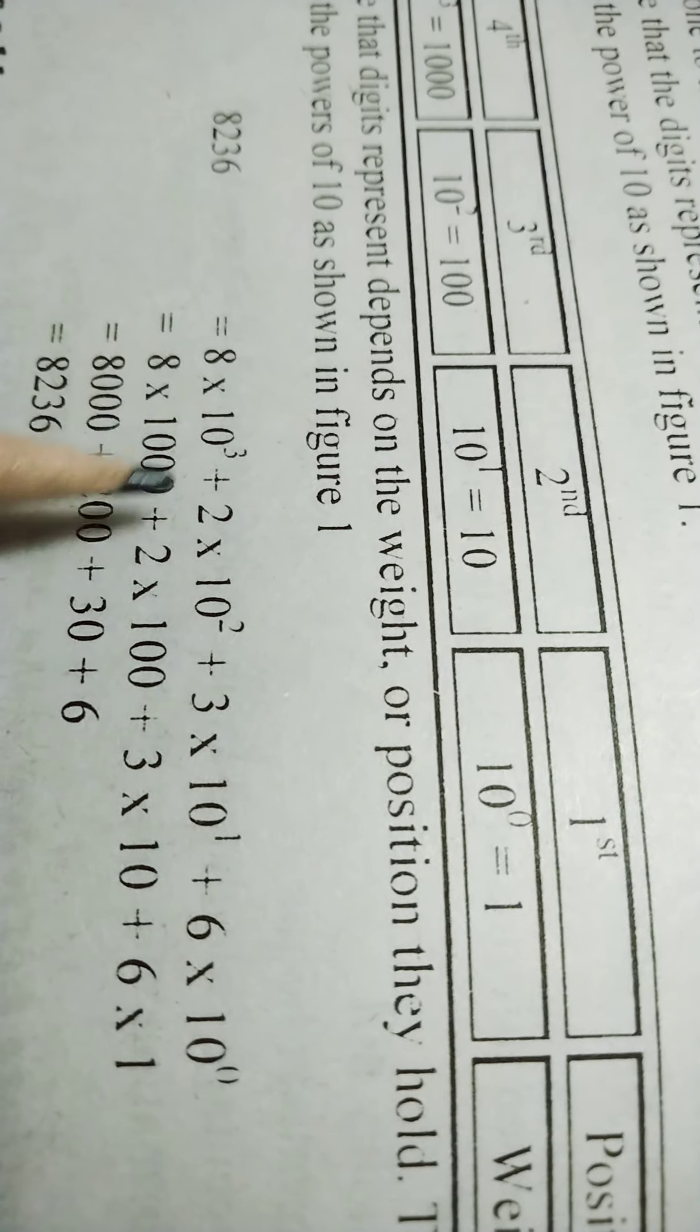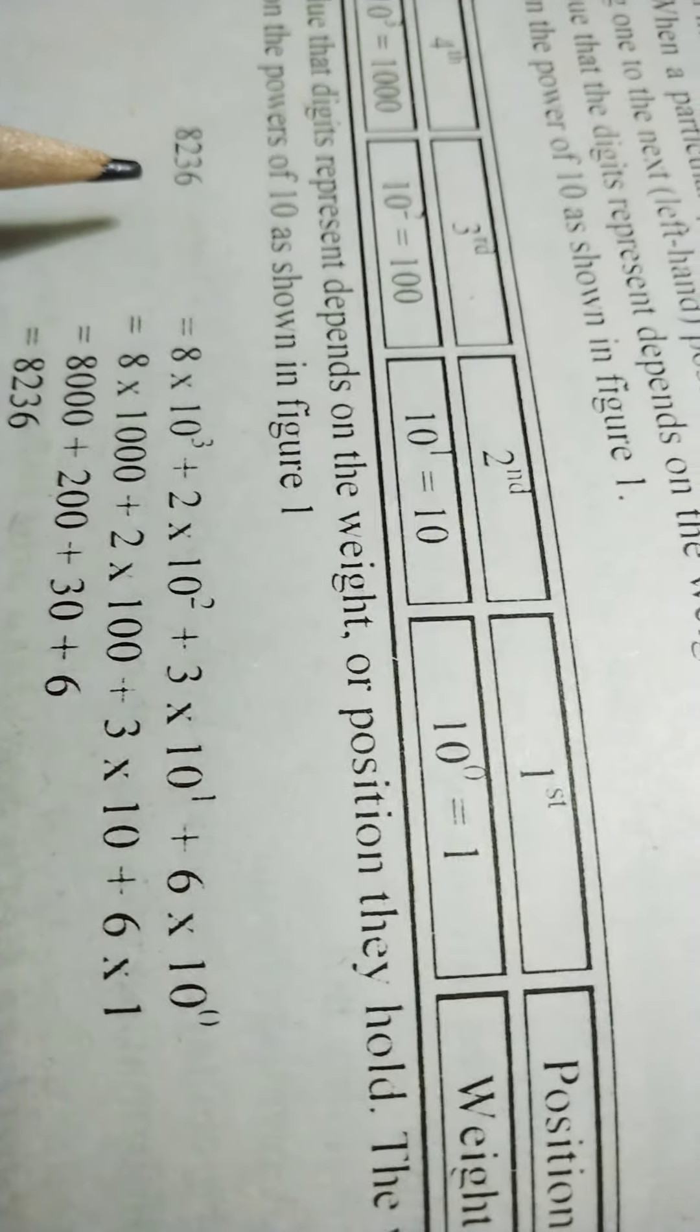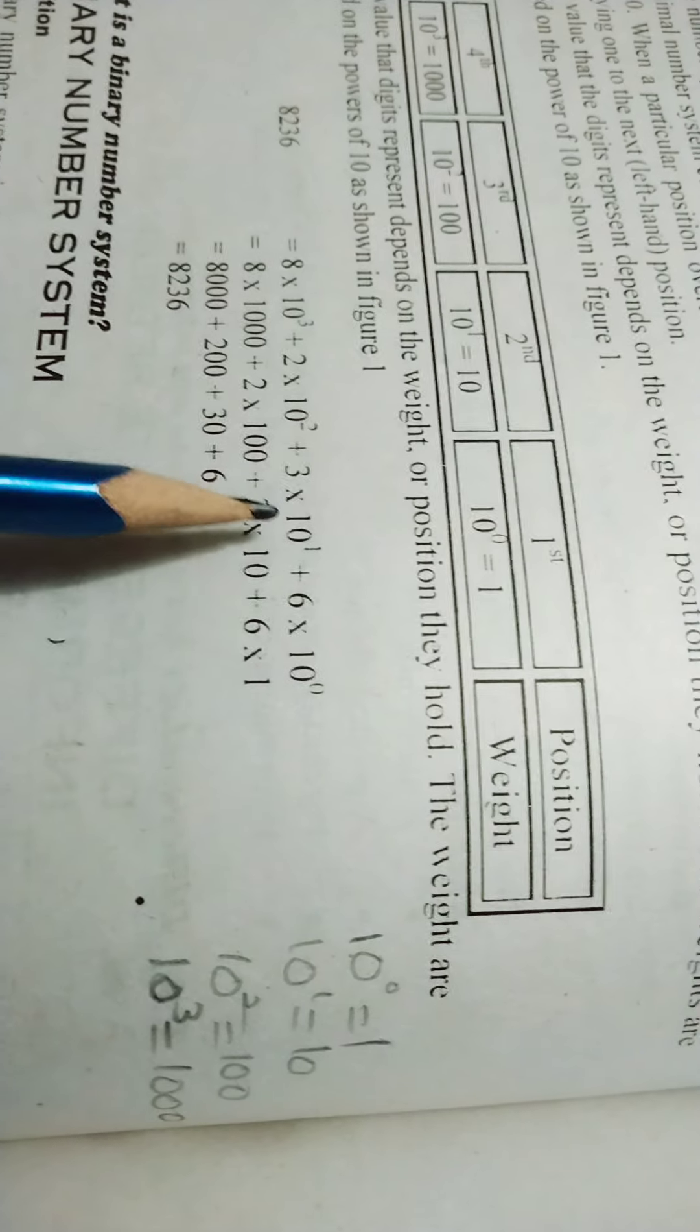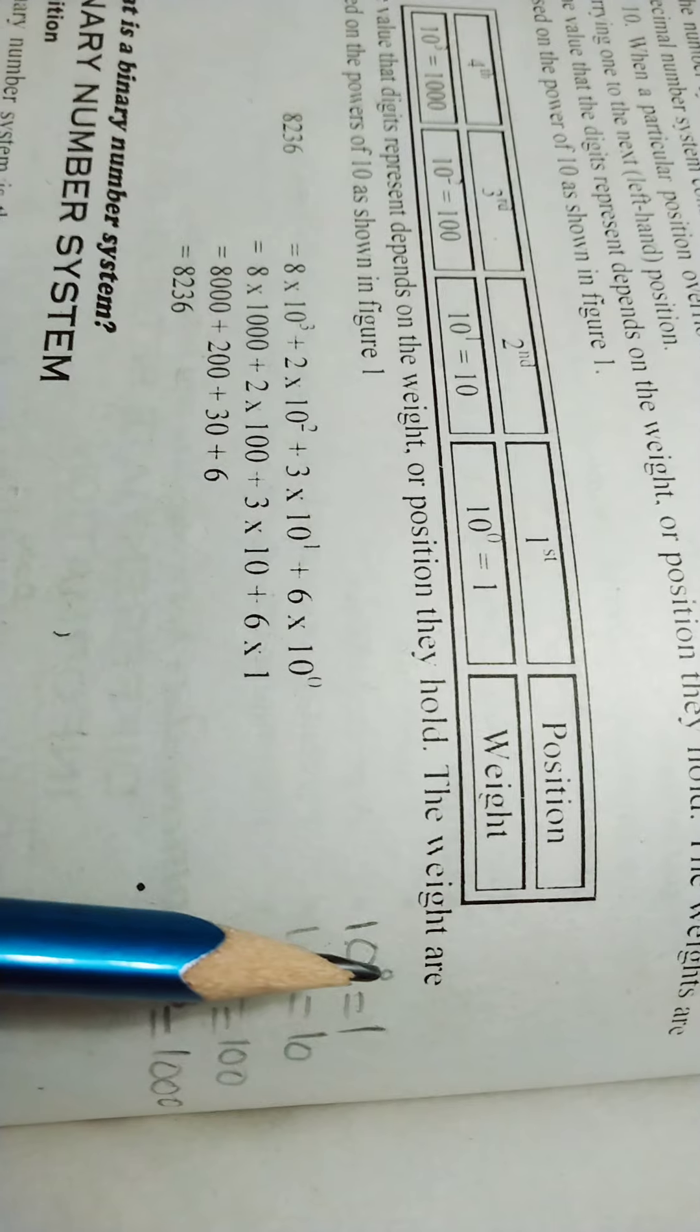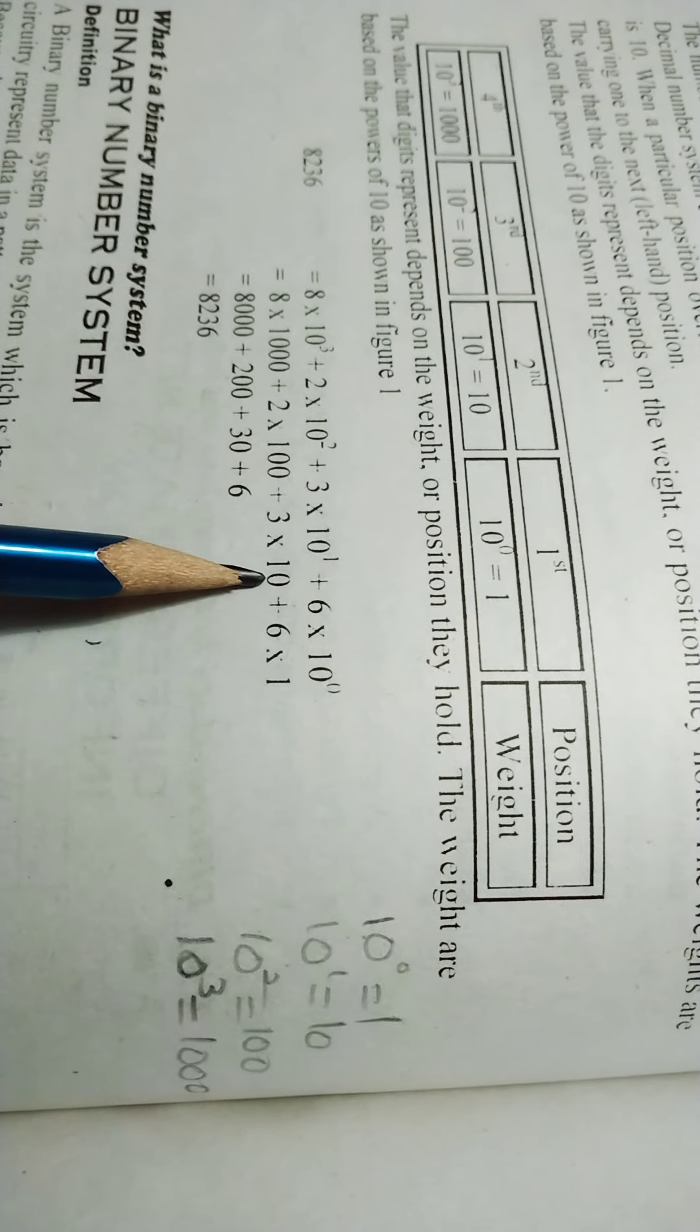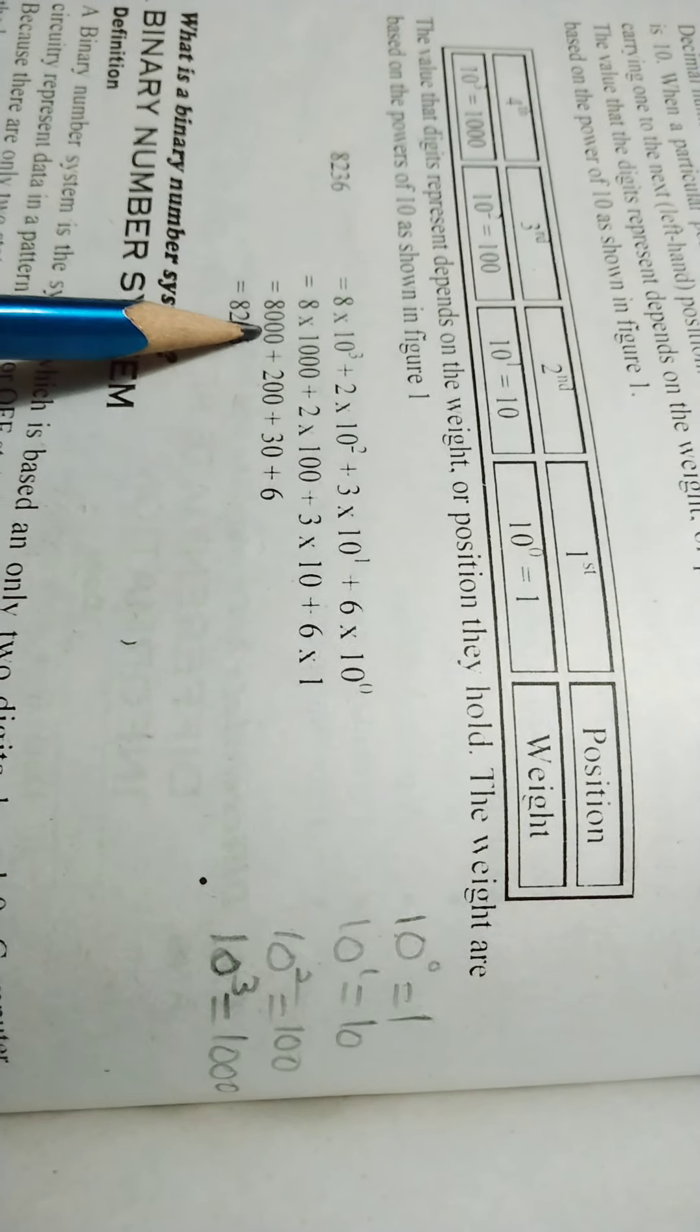First, we have the decimal system. Here we placed 8236. Each number is multiplied with the decimal value 10. 10 to the power 0, 10 to the power 1, 10 to the power 2 means hundred, 10 to the power 3 means thousand. This number multiplied with 8 gives 8000.